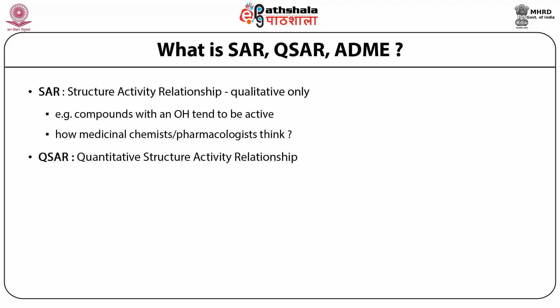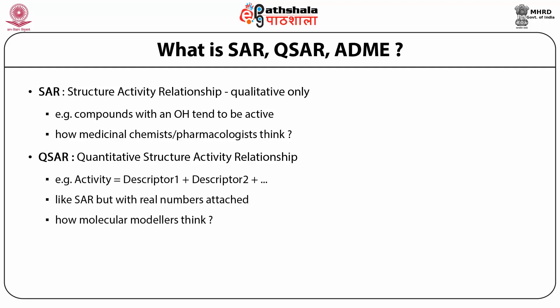For example, a compound with a hydroxyl group tends to be active — as a medicinal chemist or pharmacologist will think — and similarly a second-position hydroxyl can actually make a molecule to be solubilized easily. QSAR is not qualitative; it is a quantitative relationship. It derives an equation where activity equals many parameters or descriptors. Not only bioactivity, but also properties like absorption, distribution, metabolism, and excretion can be used to design a QSAR or QSPR model.